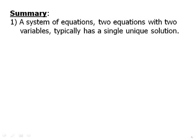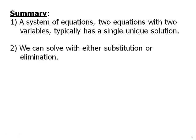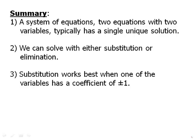In summary, a system of equations, two equations with two variables typically has a single unique solution. And again, this would be where the two lines are intersecting. That's the point that we're finding. We can solve with either substitution or elimination. Substitution works best when one of the variables has a coefficient of plus or minus one. And again, in the next lesson, we'll talk about elimination.